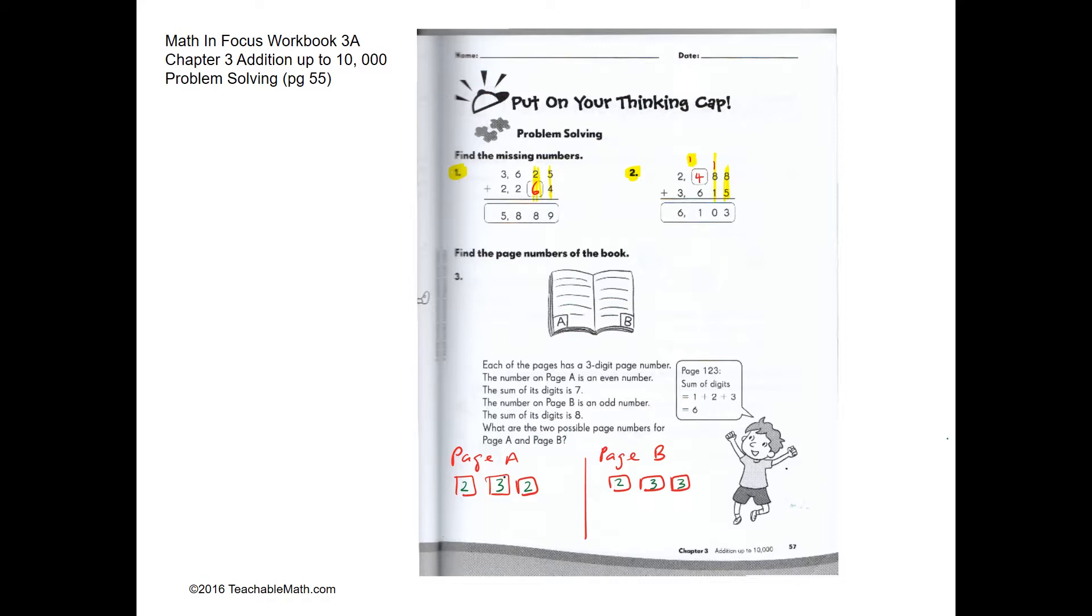We need to add 4 tens over here so that 1 ten, 4 tens, and 6 tens make 11 tens, and we have our one over here. For question three, we have to find the page numbers.